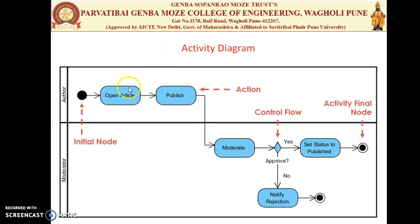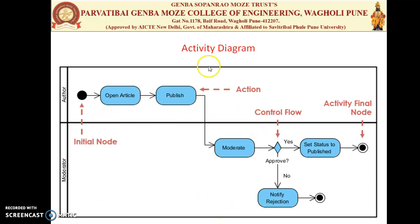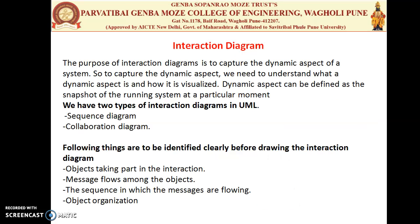The activity flow describes how the activities of your software development process work one after another — what the flow of activities is, how many activities are in the process, and what the initial and overall constraints and conditions are on which the activity flows. The next type of diagram is the interaction diagram, of which there are two important types.